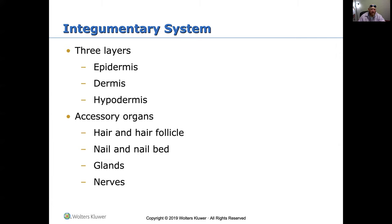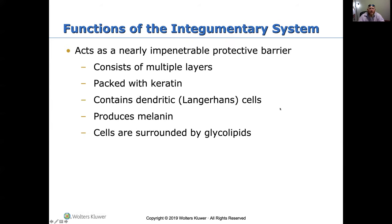Accessory organs in the integumentary system include hair and hair follicles, nails and nail beds. Glands and nerves are also found in the skin. The integumentary system acts as a nearly impenetrable protective barrier. If you have a cut or open wound, that makes it much more penetrable, so you may want to cover cuts with band-aids to keep your barrier intact.